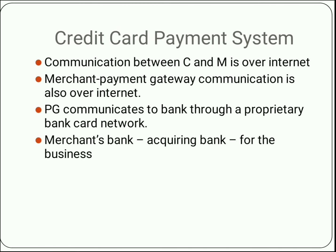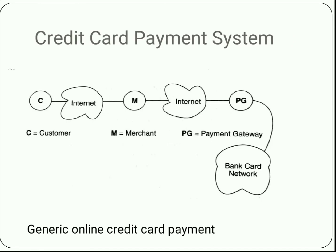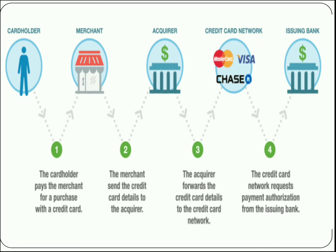The merchant's bank is the acquirer bank; this is the one in which the merchant creates an account when he starts a business. On the screen you can see a figure where the communication between C and M, and between M and PG, is shown — everything is through the internet. This is the overall view of a credit card payment system.